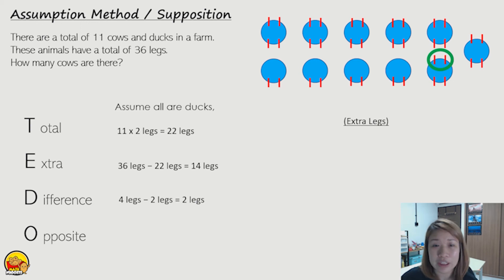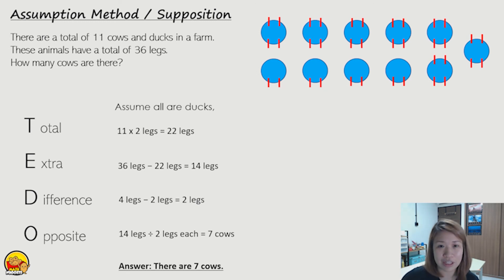Now I have redistributed all the legs. That means no more extra legs already. Okay. What have I just done? I've taken the 14 extra legs and grouped them into groups of twos, right? So 14 divided by two, I have just made seven of them cows. So the answer is there are seven cows.